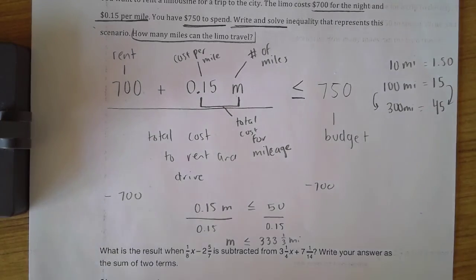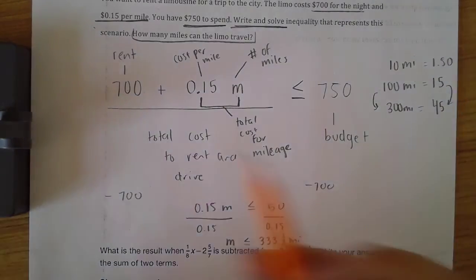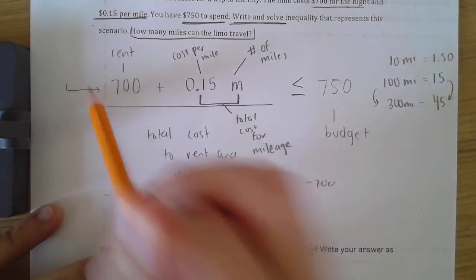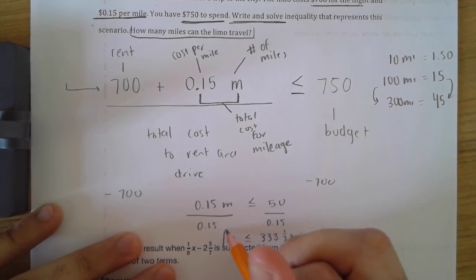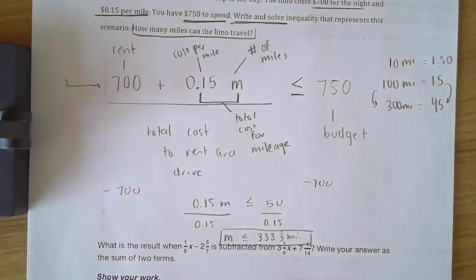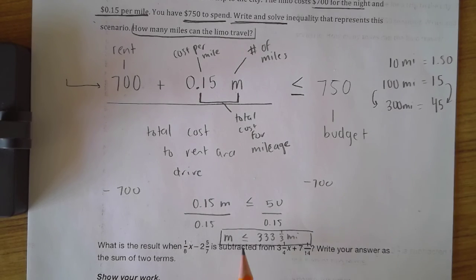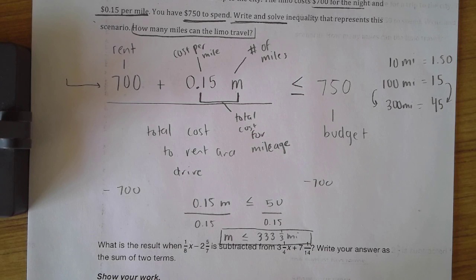That's how you write and solve an inequality. This is the written form. This would be the solution. There's a range of possible answers. I can go one mile and still be able to afford it. I can go 100 miles to be able to afford it. 300, 320, 330, 333. But the second I go over 333 and one-third miles, my answer will not work.